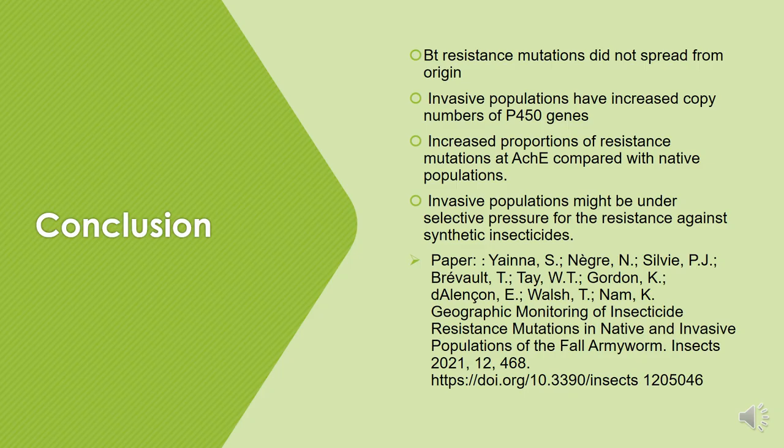In conclusion, this study showed that BT resistant mutations did not spread in invasive populations, and that invasive populations have increased copy numbers of P450 genes. At the ACE1 gene, there is an increased proportion of resistant mutations in invasive populations compared with native populations, and we conclude that invasive populations might be under selective pressure for resistance against ACE1. For more details, here is the paper for this study as well.